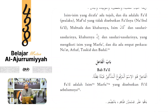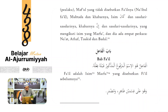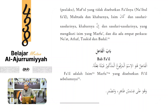Babul fa'ili. Bab fa'il. Secara bahasa fa'il diterjemahkan 'pelaku dari pekerjaan'. Al-fa'ilu huwa al-ismul marfu'u al-madkuru qoblahu fi'iluhu. Al-fa'il adalah isim - itu ketentuan pertama. Sebuah kata disebut fa'il, maka ketentuan pertama dia adalah isim. Bukan fi'il, bukan huruf.